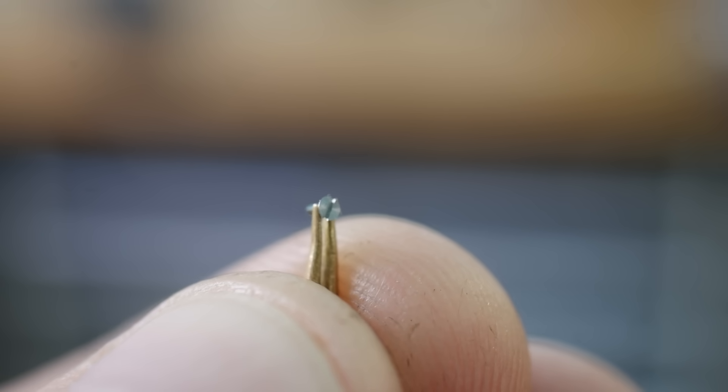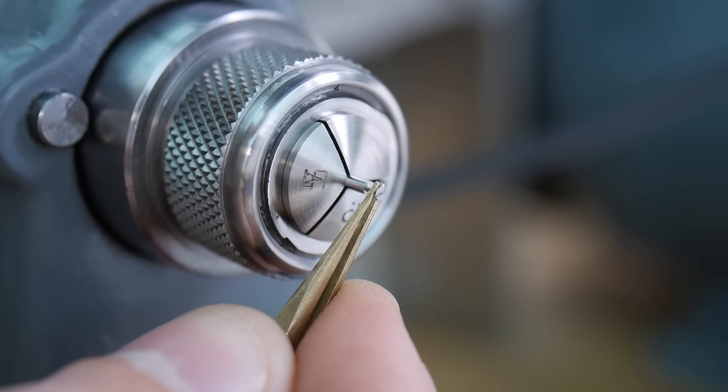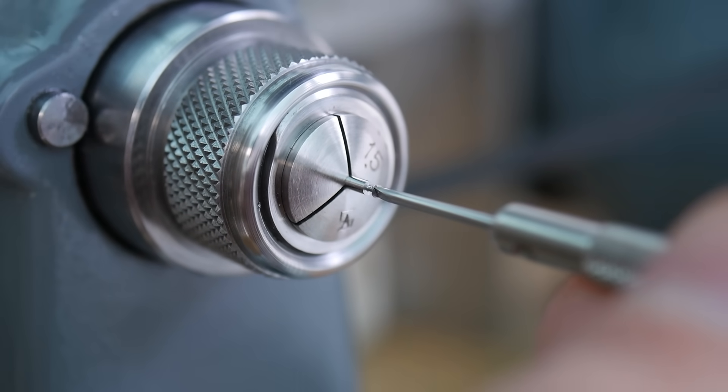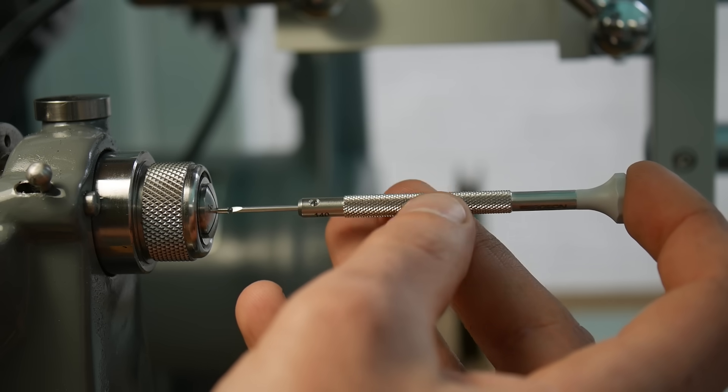Before removing the pillar from the lathe, I like to check the screw I made off-camera will fit nicely into the threaded hole. I'm really happy with the fit of the thread, so I can proceed with confidence. It's also a good time to knock off the burr from the slitting saw.